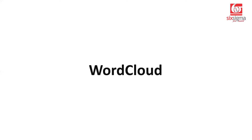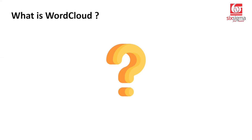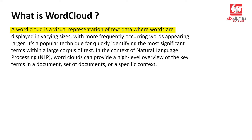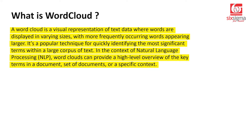So now we'll be talking about the word cloud. What is a word cloud? A word cloud is basically a visual representation of text data, where the words are displayed in varying sizes, with more frequently occurring words appearing larger. It's a technique for quickly identifying the most significant terms within a large corpus of text. In the context of natural language processing, word clouds can provide a high-level overview of a set of documents or a specific context.